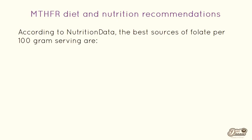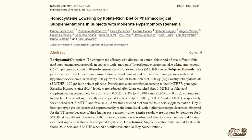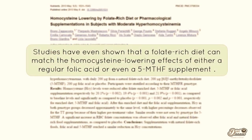The best sources of folate per 100g serving are beans and lentils, raw spinach, asparagus, romaine lettuce, broccoli, avocado, and oranges and mangoes. A 100g serving of lentils or legumes is about half of your recommended daily intake, same with raw spinach. Studies have even shown that a folate-rich diet can match the homocysteine-lowering effects of either a regular folic acid supplement or a 5-MTHF supplement — so as if we needed any additional reasons to eat more vegetables and legumes.